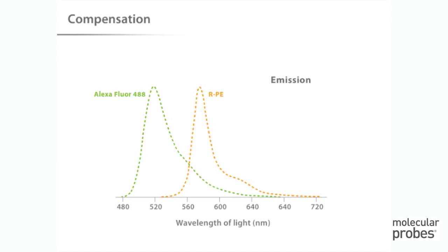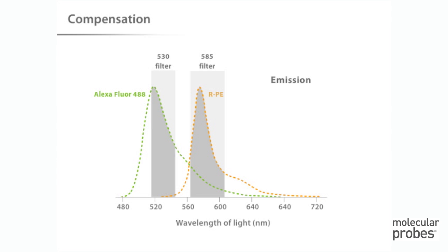Here we see Alexa Fluor 488 fluorescence collected with a 530 nanometer bandpass filter, and RPE fluorescence collected with a 585 nanometer bandpass filter. While each of these filters efficiently captures the emission peak of the target fluorophore, each one also collects a little bit of the other fluorophore due to spectral overlap in the emission profiles shown in red. For this pair of fluorophores, the amount of spectral overlap of Alexa Fluor 488 dye into the RPE channel is greater and requires more compensation than the amount of spectral overlap of RPE into the Alexa Fluor 488 channel.